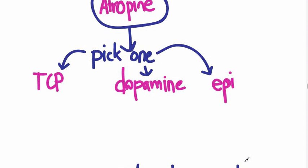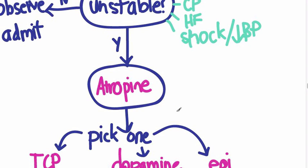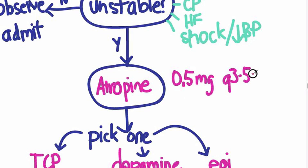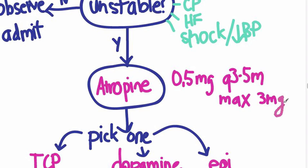Let's go over some of these drugs. First, atropine — it's an anticholinergic, and what it really does is temporize until the patient is able to get a pacemaker. The dose is 0.5 milligrams every 3 to 5 minutes, with a max of 3 milligrams — a total of about six doses.